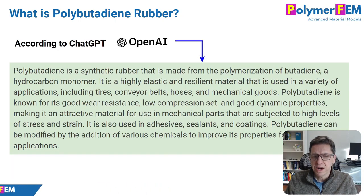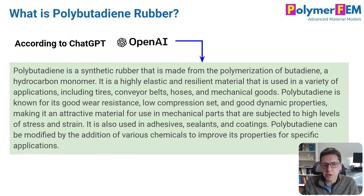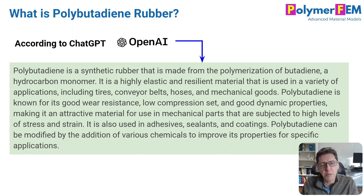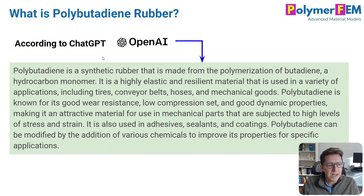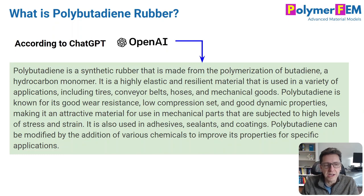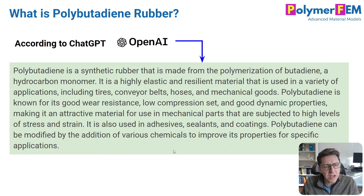I started by looking at what this rubber is all about, and I thought it was interesting to look into the new AI tool that's available — it's kind of a competition to Google in some sense. It's called ChatGPT. And if you type in 'what is Polybutadiene rubber' in this AI, this is what it spits out. It gives you information about the material that kind of makes sense.